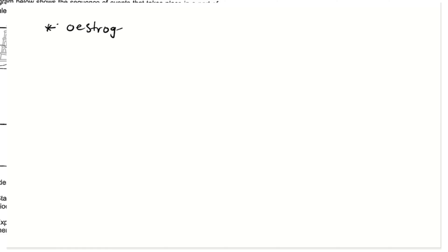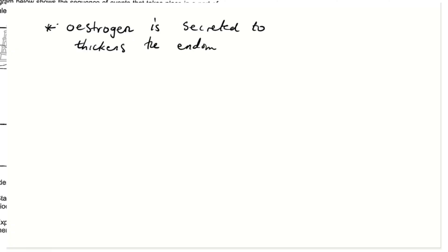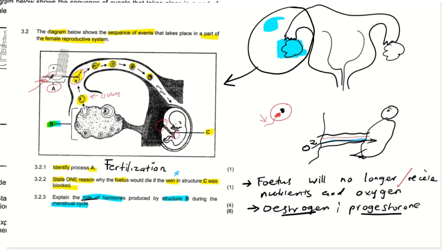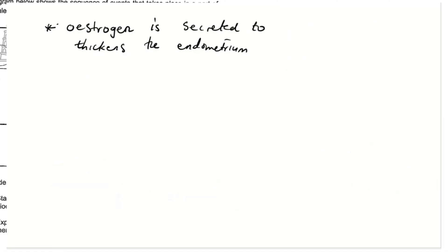We have to mention what estrogen does. Estrogen is secreted to thicken the endometrium. So it thickens this wall of the uterus called the endometrium to make it thick. Why does this layer have to be thicker? It is to prepare for implantation — estrogen thickens the endometrium to prepare for implantation.